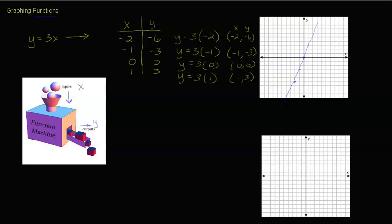This line goes on forever — we can put any number in. We could put 100 in for X, multiply by 3 and get 300, which would be way off this graph at the point 100 comma 300.